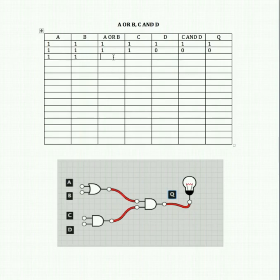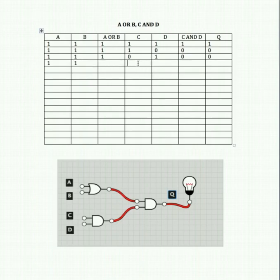A and B ON, C OFF, but D ON — we're just flipping it. A or B still gives us 1. C and D: one is OFF, so that gives us 0. Final output is 0. Next, A and B ON with both C and D OFF: A or B gives us 1, C and D gives us 0, so that's 1 and 0 as inputs to the final AND gate — output is 0.